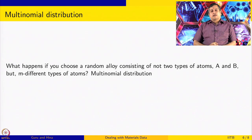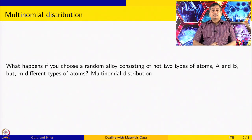Suppose you choose a random alloy consisting of not two but m different types of atoms — such alloys are known as equimolar multi-component alloys, also sometimes called high entropy alloys. In such cases, you can describe the distribution using a multinomial distribution function. Binomial is for 2 outcomes; multinomial is for more than 2. For example, an alloy made of 5 components each at 20 percent would follow a multinomial distribution.